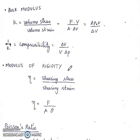Modulus of rigidity is eta. Eta is equal to shearing stress upon shearing strain, so eta is equal to F upon A theta.